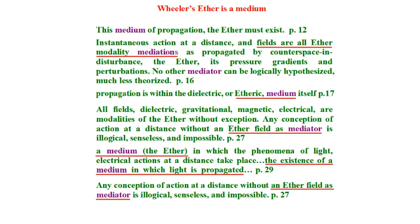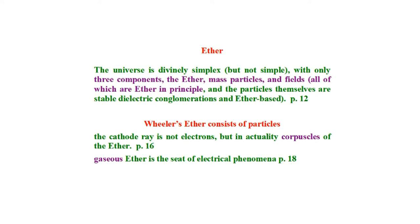What is the ether? I go in and look it up. An ether is a medium — he's got that all over his book. That's a mediator, a medium. It's some kind of medium; in a previous passage he said it's got a membrane. So we need to know what a medium is, but he doesn't define it. The ether is also made of particles. He says cathode rays are not electric but are actually corpuscles of the ether, and that the gaseous ether is the seat of electrical phenomena. So the ether is clearly made of particles.